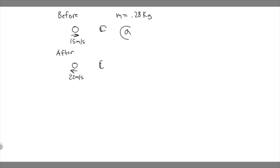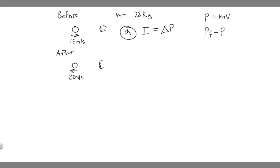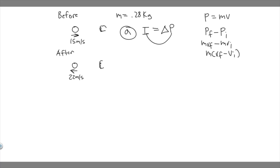Let's start with Part A. We're trying to solve for the impulse, which we denote by the letter I. The impulse is essentially the same as the change in momentum, and we denote momentum by P. Momentum P equals MV. If you want to find the change in it, the mass is constant throughout, so it's just P final minus P initial. The final momentum minus the initial gives us M times V final minus V initial.